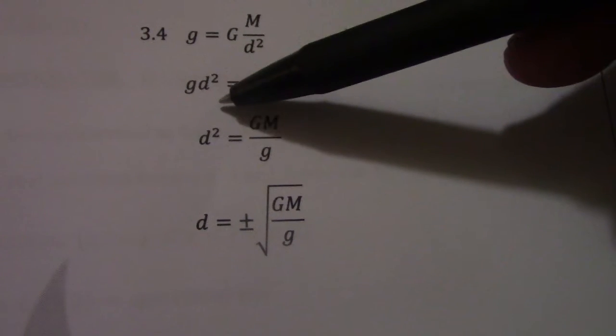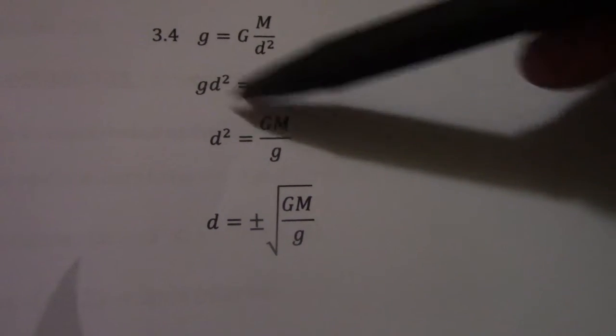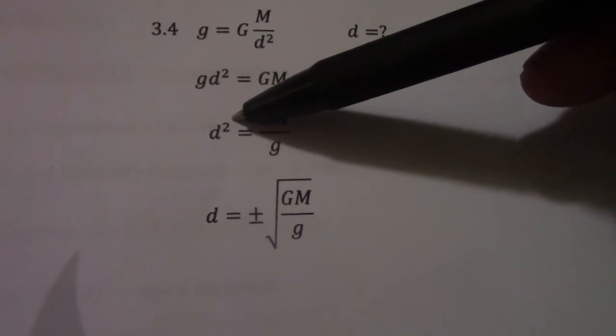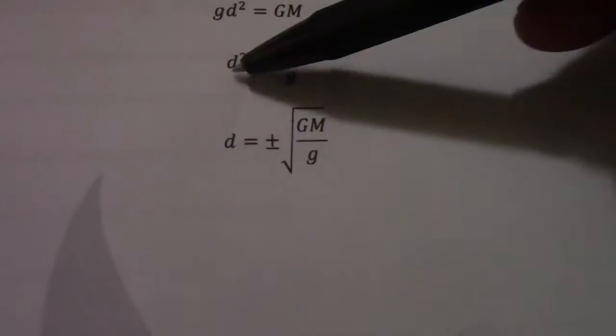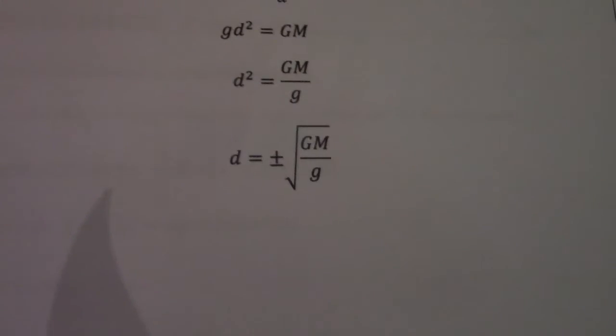Now I want d on its own. So first get rid of g. So therefore becomes gm divided by g and I'm left with d squared. Whenever I find the square root of d squared this will always be plus or minus. Because square root of positive squared or negative squared always end up positive, so that simply becomes square root gm divided by g.